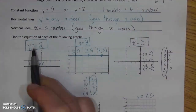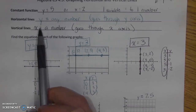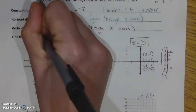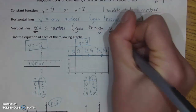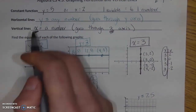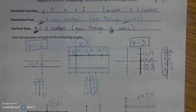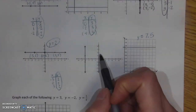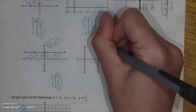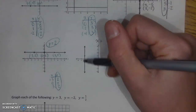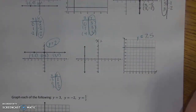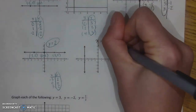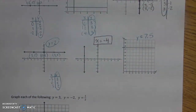A lot of times people get horizontal and vertical confused and wonder when to use x versus y. You can always use a t-chart, but here's a shortcut: it will be x equals when the line goes through the x-axis vertically, and y equals when the line goes through the y-axis horizontally. For the last one — a vertical line going through the x-axis at negative 4 — the formula is x equals negative 4.